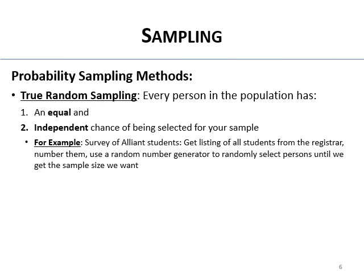The 'independent' part means that one person being selected does not change the probability of any other person being selected. A counter-example would be: you randomly select a house, and anyone in that house is included in your sample. That would not be true random sampling because other people's probability of being selected is increased by having a family member complete the survey.